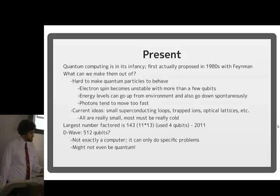And most of them have to be really cold, which makes things really expensive. And so we haven't built a very big quantum computer yet. The largest number that's been factored is 143 into 11 times 13, and that was in 2011. It used four qubits somehow. I'm not sure how it got to use that few. D-Wave is, if you follow Time Magazine, they talked about that. The D-Wave 2 is 512 qubits. But it's not exactly a computer because you can only do a specific kind of problem, and it might not even be quantum. We haven't proven whether or not it is yet. And so that's the largest quantum computer we've built. The actual quantum computer is really small.